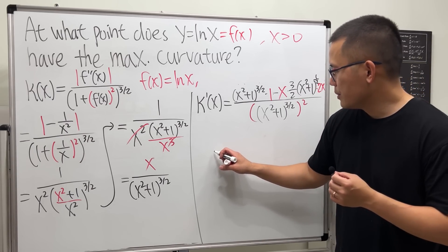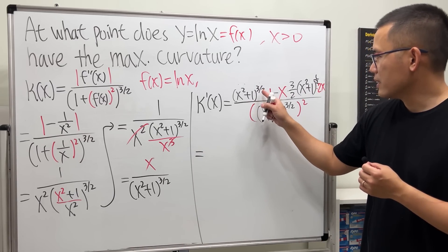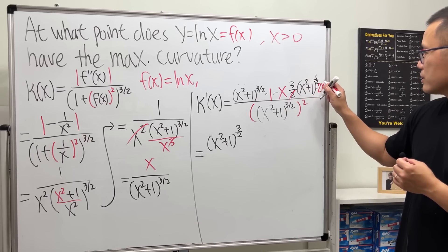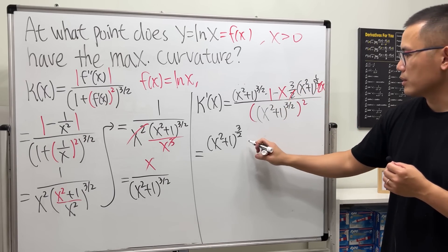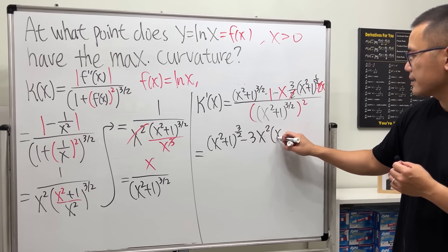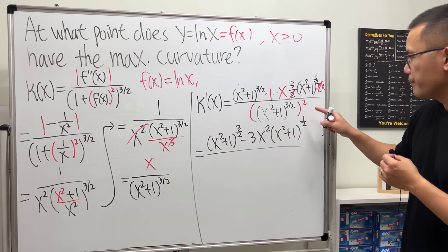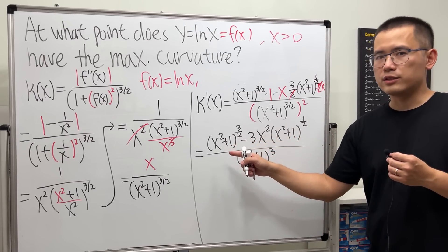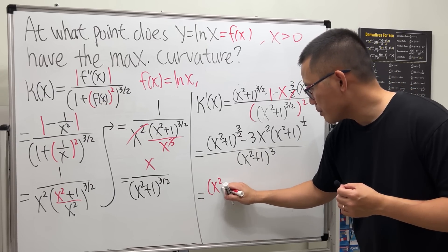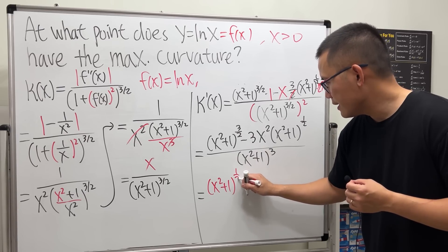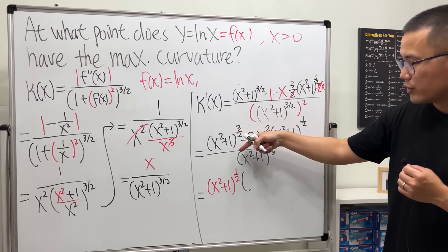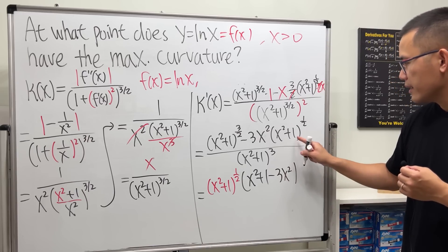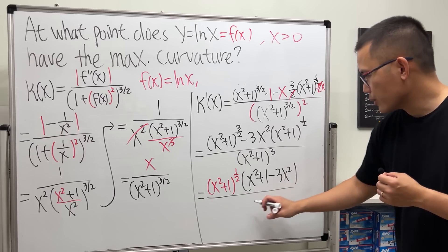Simplifying: the first part is (x² + 1)^(3/2), and the 2s cancel nicely, giving x². Then minus 3x² times (x² + 1)^(1/2), over (x² + 1)^3 on the bottom. We can factor out (x² + 1)^(1/2), which leaves (x² + 1) minus 3x² in the brackets. You don't really need to simplify much further.